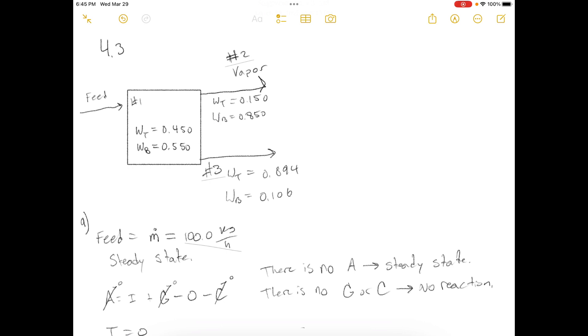Part A. Suppose the process is to be carried out continuously and at steady state, with a feed rate of 100 kg per hour of the 55% mixture. Let M dot V and M dot L be the mass flow rates of the vapor and liquid product streams respectively. Draw and label a process flow chart, then write and solve balances on the total mass and on benzene to determine the expected values of M dot V and M dot L. For each balance, state which terms of the general balance equation, accumulation equals input plus generation minus output minus consumption, you discarded and why you discarded them.